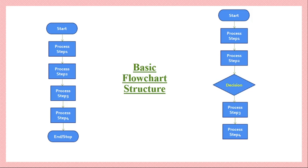Based on that decision we will proceed accordingly. After a decision is taken it will generally have two outcomes: yes/true or no/false. If the outcome is yes, we proceed to step three and then step four. If the outcome is no, we skip step three and directly proceed to step four. So step three and step four are executed based on the decision. Once step four is executed, that is the end of the process, represented by the relevant end symbol.